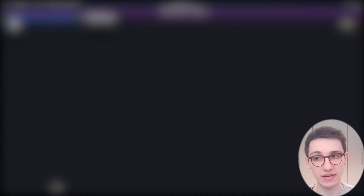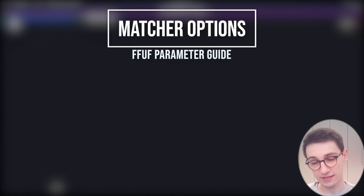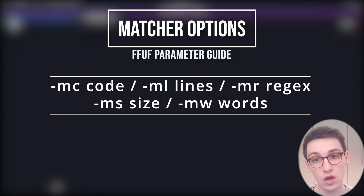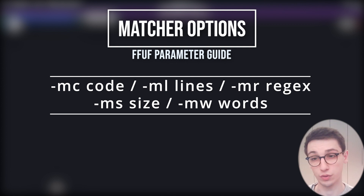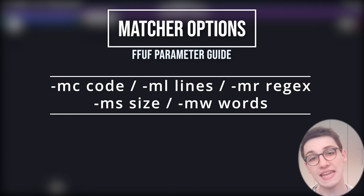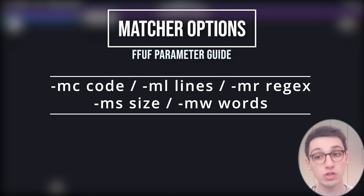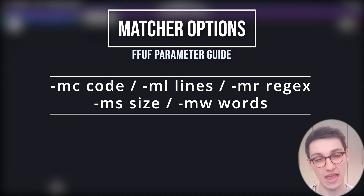Now let's talk about matcher options. These options say: if the response for a request matches one of these criteria, show it. With -mc you can match status codes — for example show responses with a 200, and by default 200, 204, 301, and so on are already matched. With -ml you match by a specific number of lines in the response. You can also use regex with -mr, match response size with -ms, and match by word count in a response with -mw.